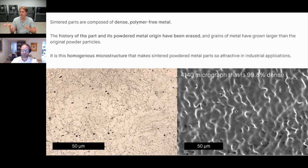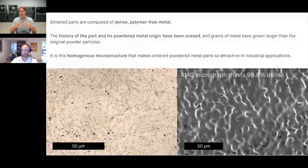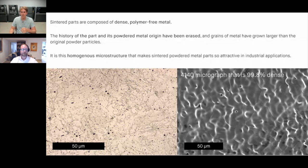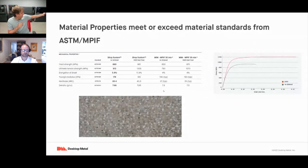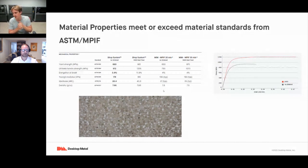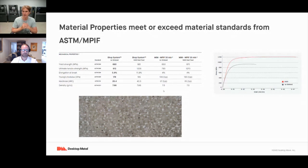This homogeneous microstructure makes these parts very attractive for end-use applications. Anisotropic parts are very difficult to understand in terms of failure prediction; when your part is isotropic, as with our sintering process, it's excellent for a wide variety of industrial applications. Our materials meet or exceed ASTM and MPIF standards. For example, 17.4 PH printed on the Shop System has a yield strength of about 660 MPa — the MPIF 35 standard is about 650. With H900 heat treatment, that yield strength rises all the way up to 981 MPa.